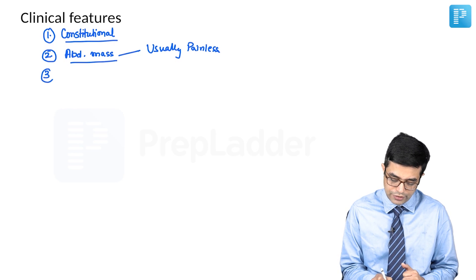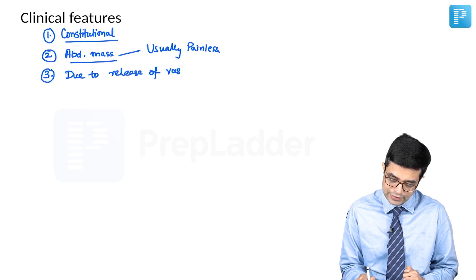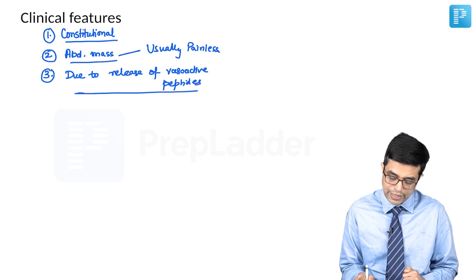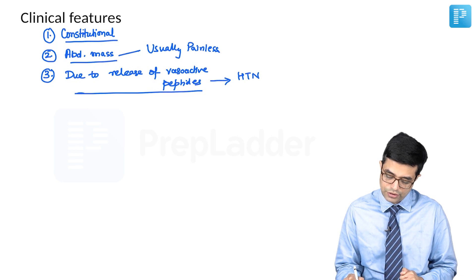The third clinical feature will be features related to release of vasoactive peptides. These are vasoactive tumors that produce catecholamines, and due to the release of catecholamines, there may be features of hypertension and sweating.